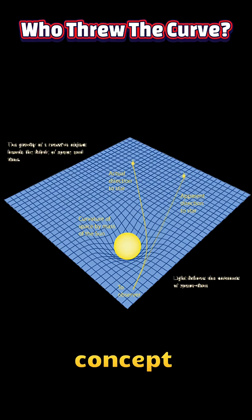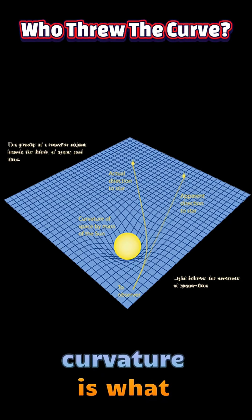General relativity takes the concept further by showing that space-time is not a rigid stage on which events unfold, but a dynamic fabric that can bend and curve in response to mass and energy. Massive objects like stars and planets warp the geometry of space-time around them, and this curvature is what we perceive as gravity.